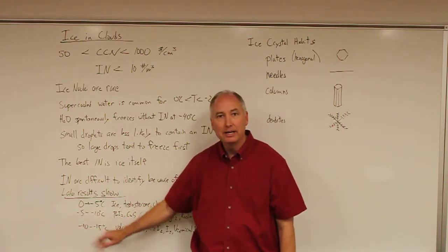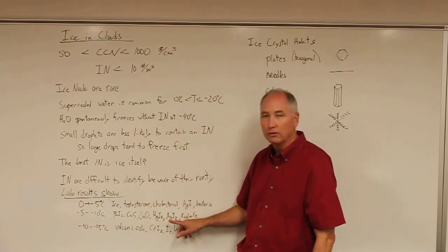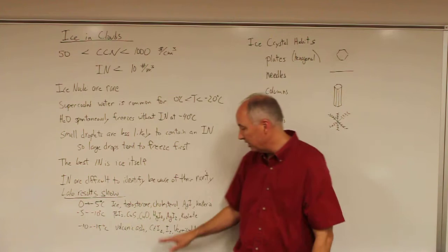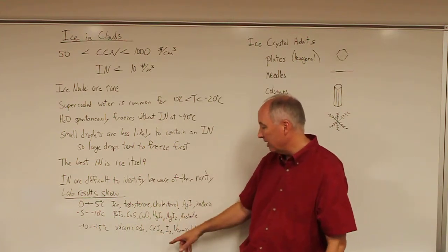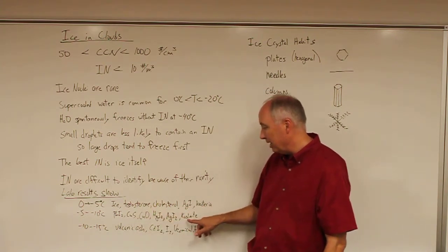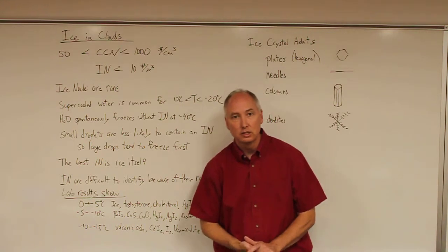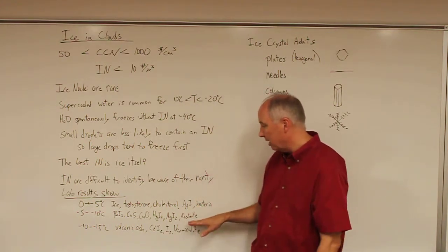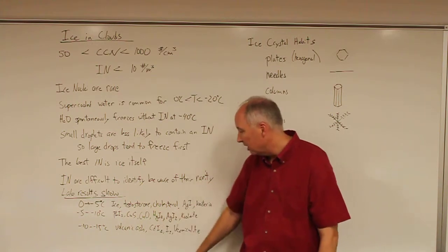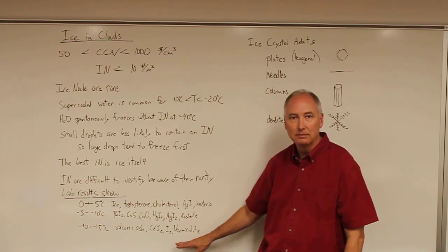In the -5 to -10°C range, we have some very common ones you've probably heard about. Silver iodide was discovered back in the 1940s as a good ice nuclei. Silver iodide, mercury iodide, copper sulfide, and kaolinite—a naturally occurring mineral in many mineral dusts. In the -10 to -15°C range, we have volcanic ash, calcium iodide, and vermiculite, which is another type of mineral.